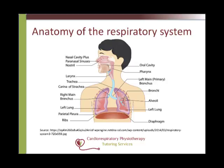Let's look at some basic anatomy of the respiratory system. We can see here an overview of the main elements, from the upper respiratory tract consisting of the nose, mouth and throat, and the lower respiratory tract consisting of the lungs.